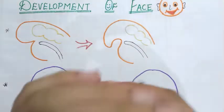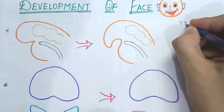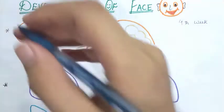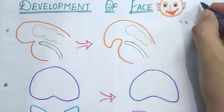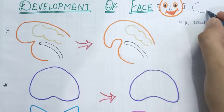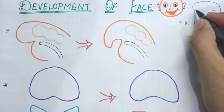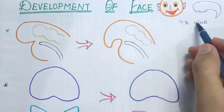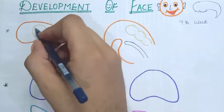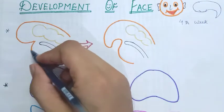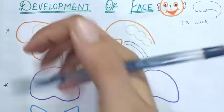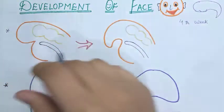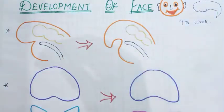During around the fourth week of intrauterine life, there is a formation of a head fold and a tail fold. In the head fold region we have two swellings. The embryo shape has an upper portion called the head fold and a lower portion called the tail fold. The head fold shows two swellings: one is due to the developing forebrain, and the other is the pericardial swelling, which includes different arteries and venous drainage developing into the future heart.